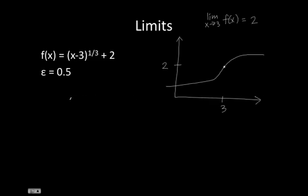So now we're going to try to find the corresponding delta values that give us x values that fall between epsilon of 2. So in this case we want f(x) to fall between 2 minus epsilon and 2 plus epsilon.